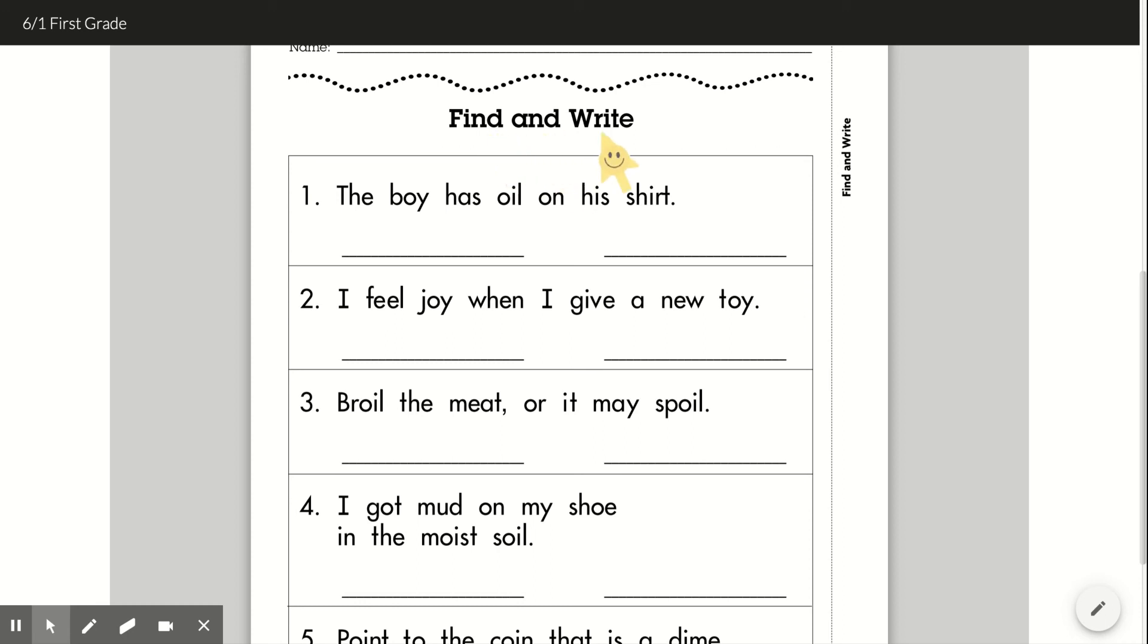Find and write. We will find the words in the sentences that make the sound oi. I remember that the letters oi and oy both make the sound oi. Okay, let's read and see if we can find which words sound like oi in this sentence.